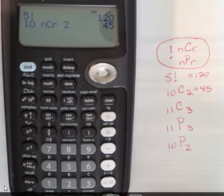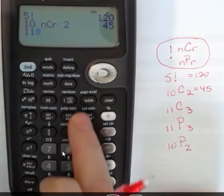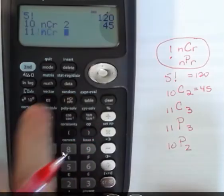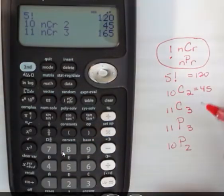If I have 11 choose 3, again 11, hit the button twice, one, two, and then choose 3. That's 165 ways.